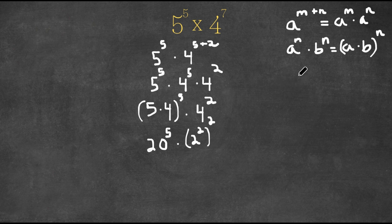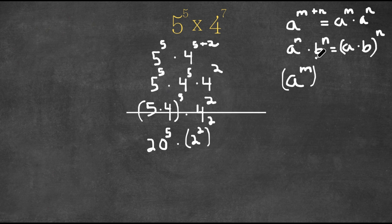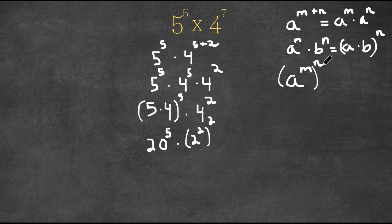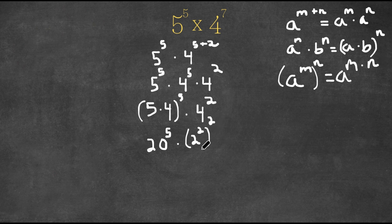Now this is actually another exponential property: if we have a to the power of m to the power of n, this is equal to a to the power of m times n. So 2 to the power of 2 to the power of 2, this is the same thing as 2 to the power of 4, because we're simply multiplying the two exponents.